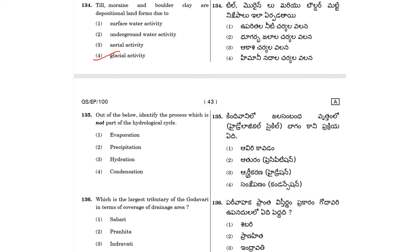Question 135: Identify the process which is not part of the hydrological cycle. The hydrological cycle includes evaporation, precipitation, and condensation. Hydration is not part of the hydrological cycle, so 135 answer is option 3.